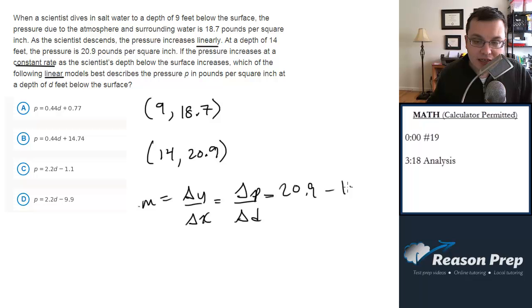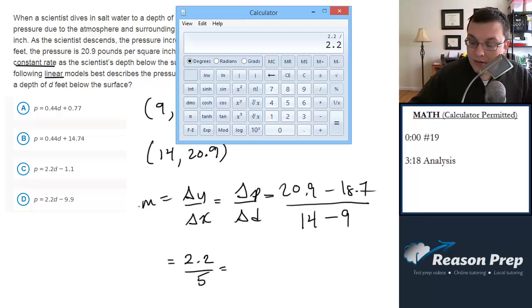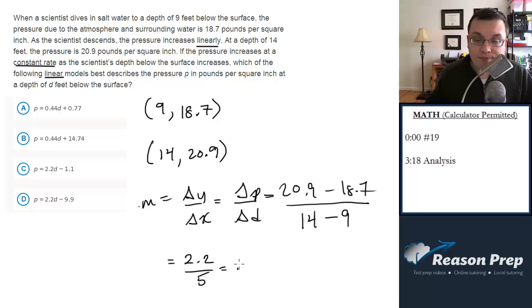So, we'll do 20.9 minus 18.7 over 14 minus 9. 20.9 minus 18.7 is 2.2 divided by 5, and we get 0.44. We go to the choices and we see which has a slope of 0.44. It's not c, it's not d, it's one of these.